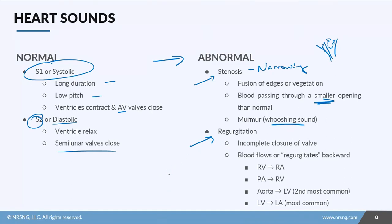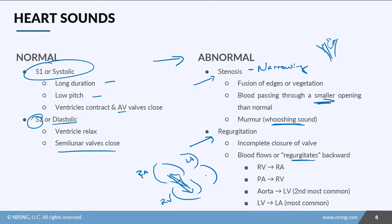Regurgitation is different. If this is your atria and this is your ventricle with the valve between them, blood is supposed to go one way — but because the valve doesn't close all the way, blood ends up going backward. That backflow is the regurgitation. You can have regurgitation from the right ventricle to the right atrium, or from the pulmonary artery back through the pulmonic valve. You can also have it from the aorta.